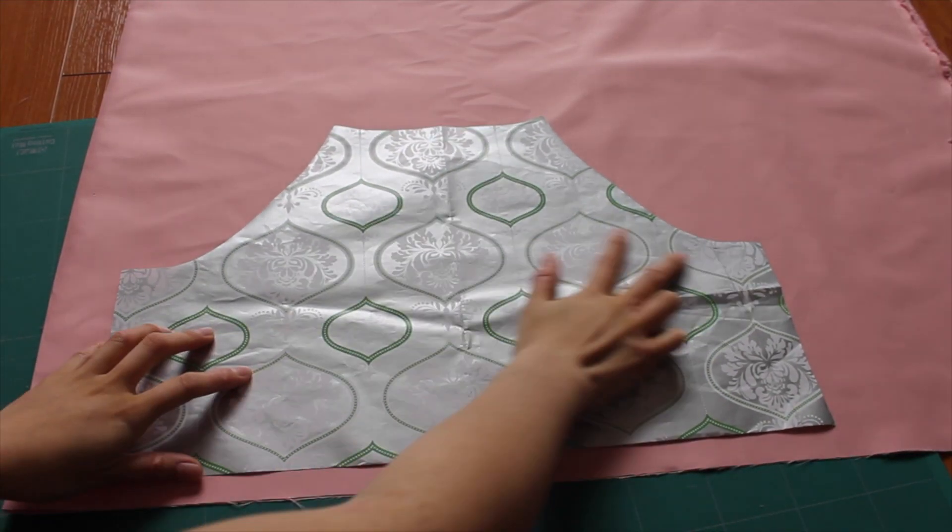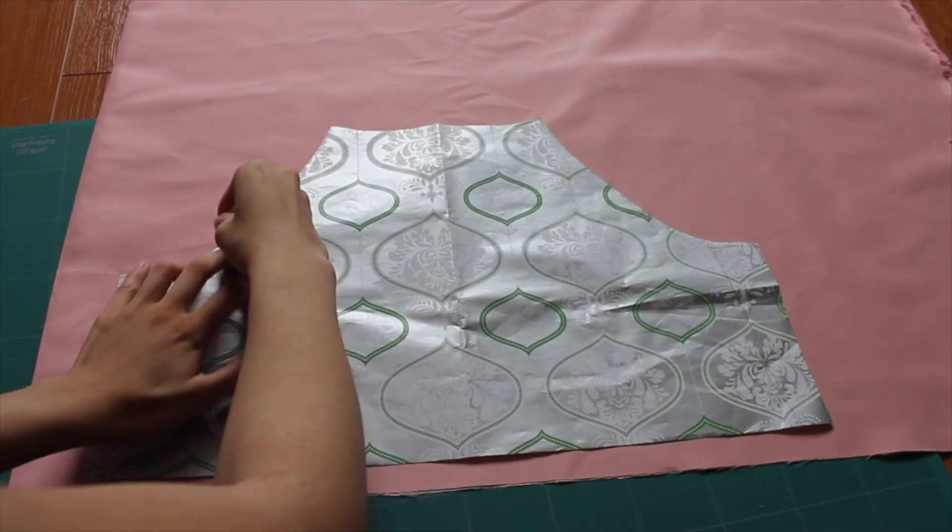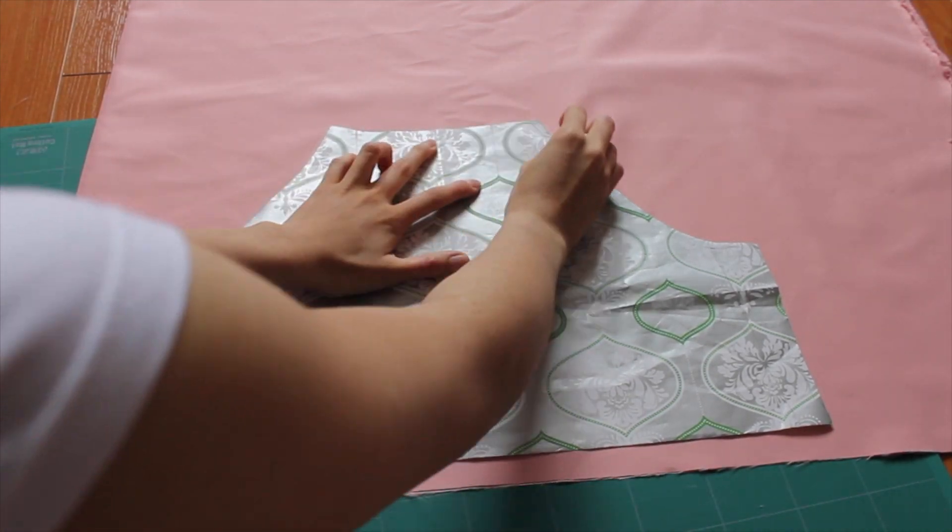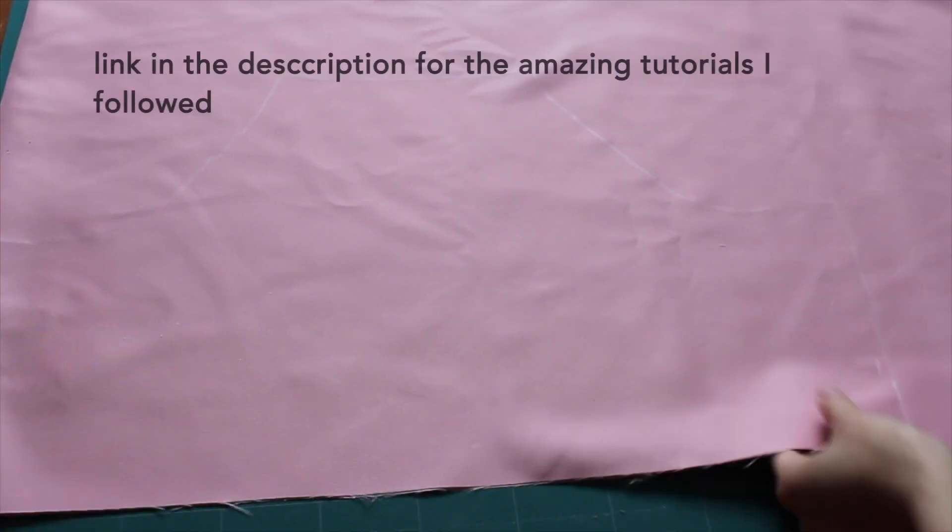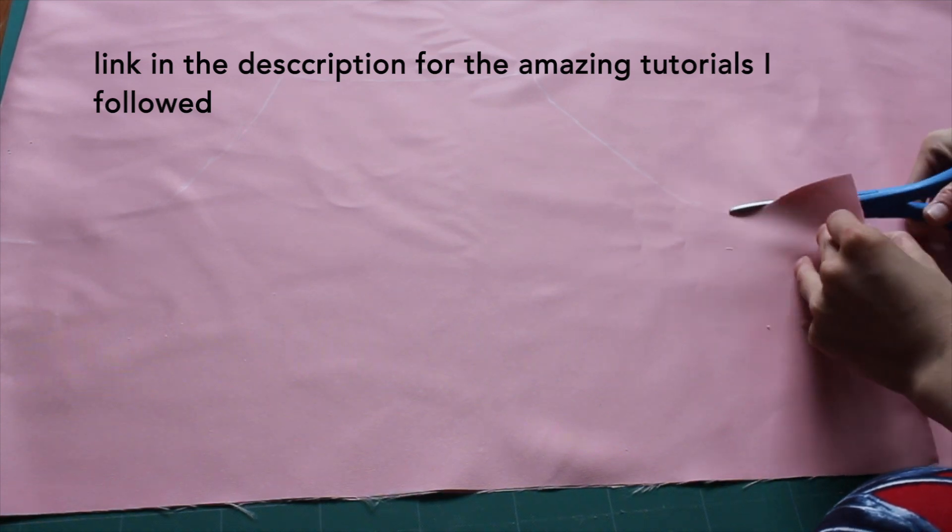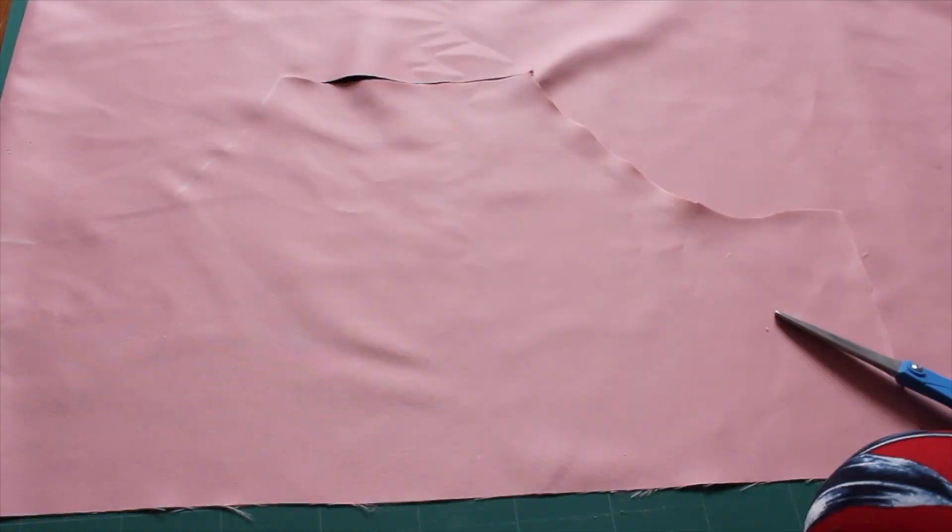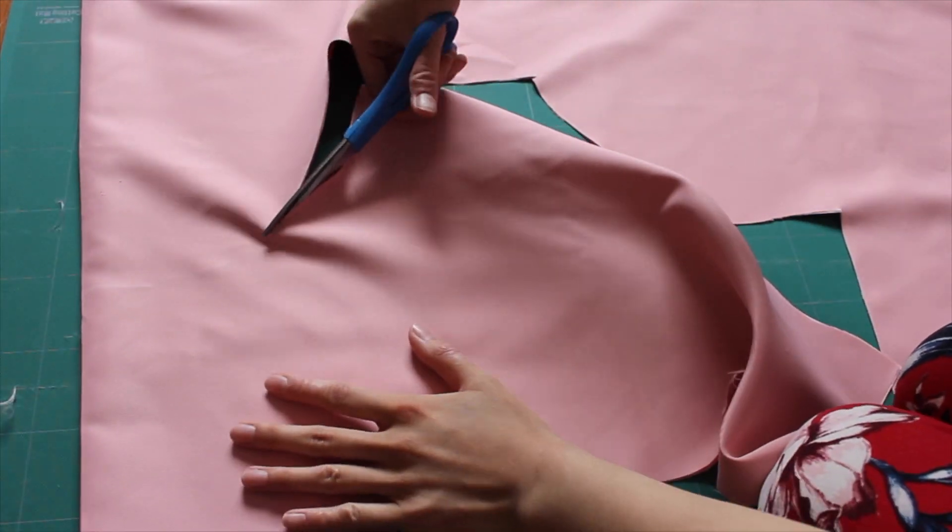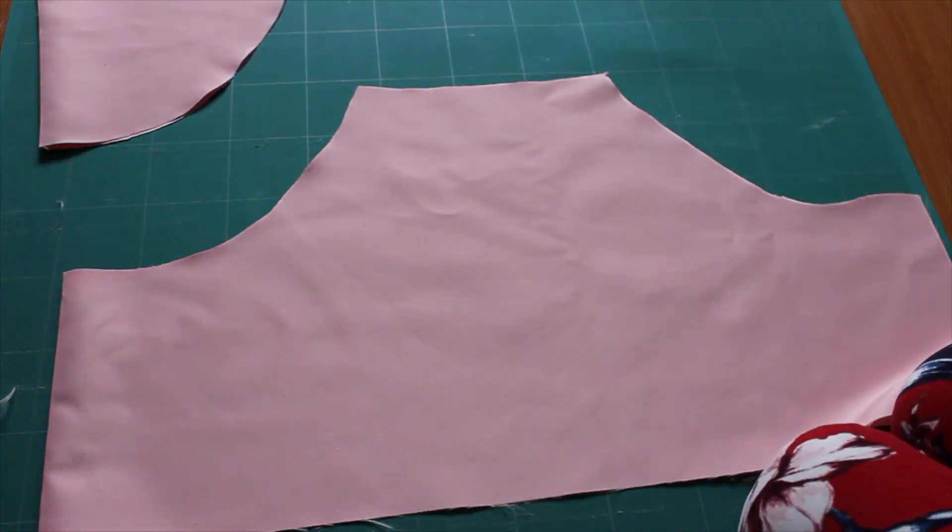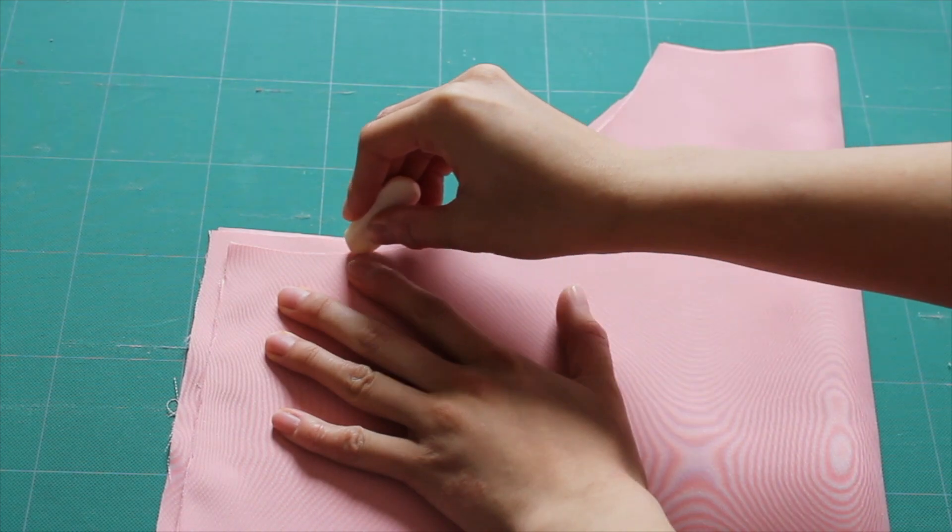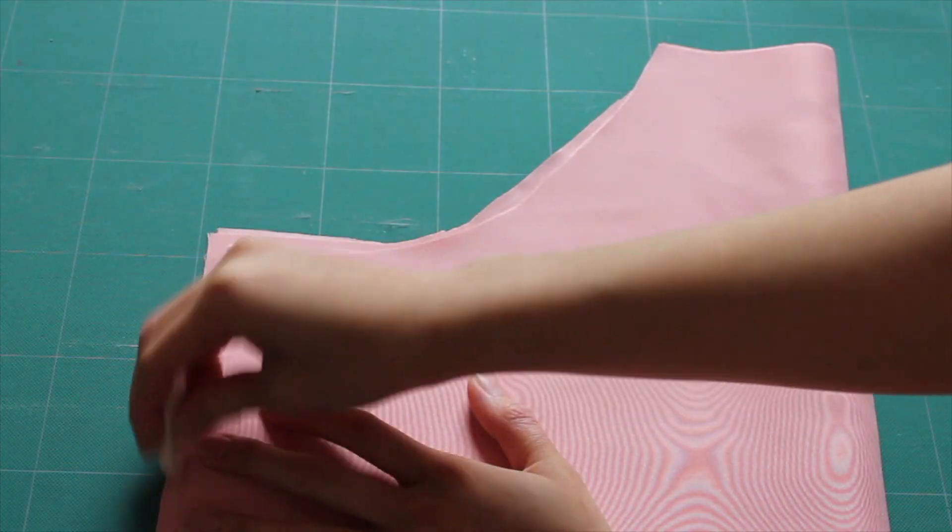The first thing I did was I traced out a halter top pattern on a piece of gift wrap paper, and you can easily do this by just taking an old halter top you have and making a pattern out of that. I then placed it onto my fabric, and my fabric was folded in half so that I would have two pieces at the end. Here I'm just trimming off the excess because I didn't cut it perfectly even.